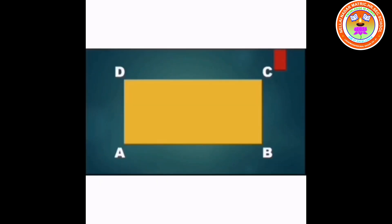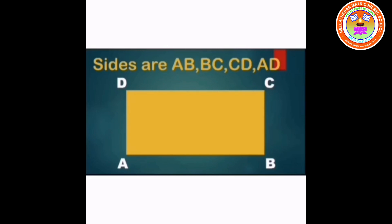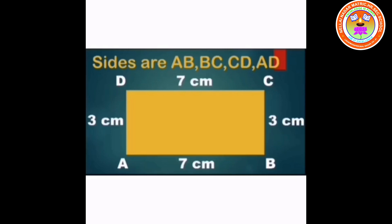For example, this is a rectangle. It is a closed figure. There are 4 sides: AB, BC, CD, and DA. The sum of all 4 sides is called the perimeter.